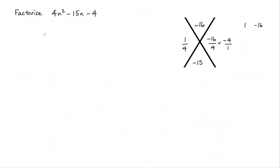And now I'm ready to factorize. So I'll pop in my two brackets. Now this value here, this denominator, will be this coefficient in front of my n term here. And the numerator will be this constant here.